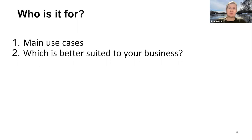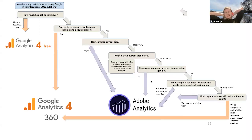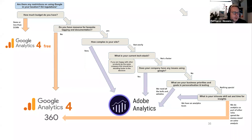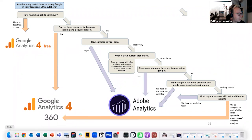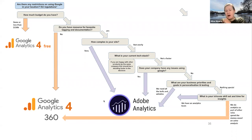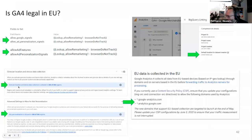We've looked at main use cases and which better suits your business — it comes down to things we've discussed. The first question in the decision-making process is: are there any EU restrictions on using Google in your location? Is this going to play a part in your decision making? I'll pass that to Google Phil — someone also asked that in the chat.